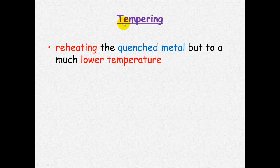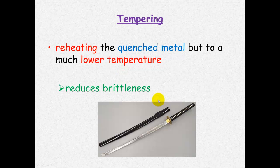The last form of heat treatment is called tempering. This involves reheating the quenched metal, but to a lower temperature. This reduces the brittleness. This is what the samurais used to use to make their swords, which are some of the sharpest and hardest metals in the world.